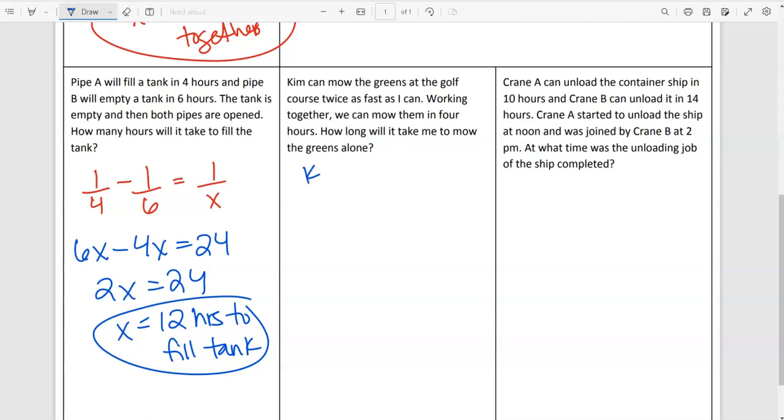Working together, we can mow them in four hours. How long will it take me to mow the greens alone? So we got Kim here. Kim can mow the lawn in however many hours, we don't know. But I know that she's twice as fast as I am. So I am two X. Meaning I take two times longer. Does that make sense? X is the job. I'm two X. I take twice as long to do the job. Together, we do the job in four hours. So it's kind of like the first one we did, but the X is in a different place.